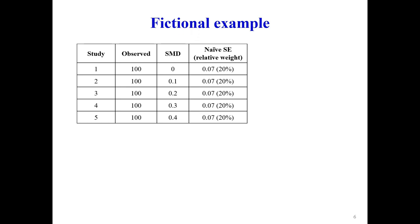Before getting into details about the suggested methodology, here is a fictional example. Suppose you have five studies, all with data from 100 participants. You have the SMDs in the third column, and the standard error is the same for all five studies, so each study has the same weight. The meta-analysis estimate is the arithmetic average of the SMDs, equal to 0.2.